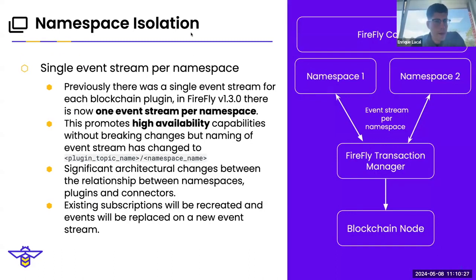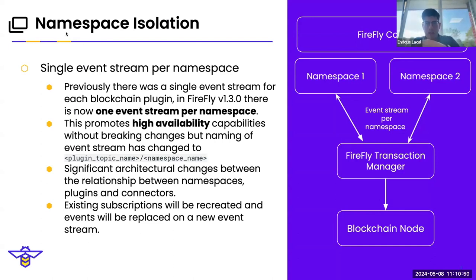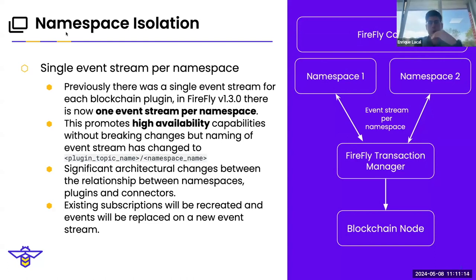One of the big pieces is namespace isolation. Previously, we had a single event stream for each blockchain plugin. If you had a namespace configured to talk to Besu with one transaction manager and you wanted to reuse that transaction manager in namespace 2, you were using the same event stream — a web socket communicating between Firefly Core and the transaction manager, with one subscription listening to all events. In 1.3, we create one event stream per namespace. Now we have complete isolation for that event stream. We can replay events specific to that namespace instead of sharing the same event stream across namespaces, which promotes high availability. This isolation will help us in the future as we work toward running multiple Firefly Core runtimes.